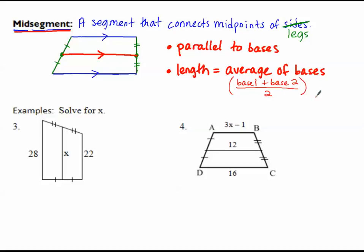Let's do some problems with mid-segments. Solve for x. I can see this is a mid-segment because it connects a mid-point to a mid-point — the congruent marks confirm it. So x equals the average of the two bases: 28 plus 22 divided by 2. That's 50 divided by 2, which equals 25. x equals 25.